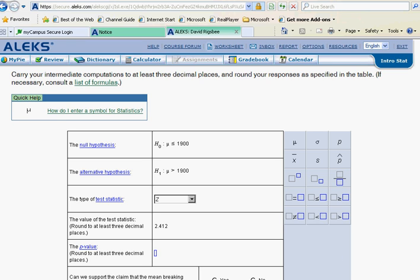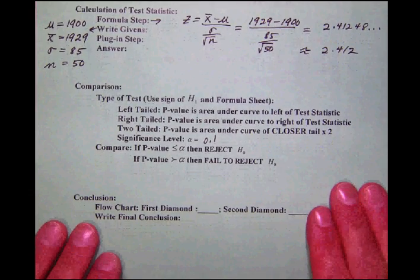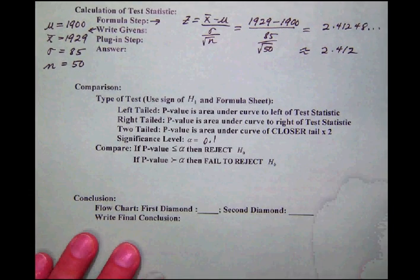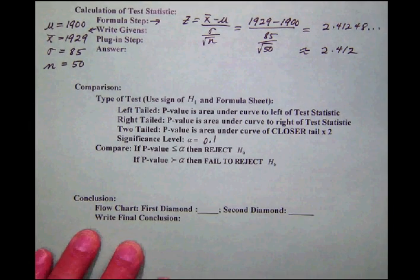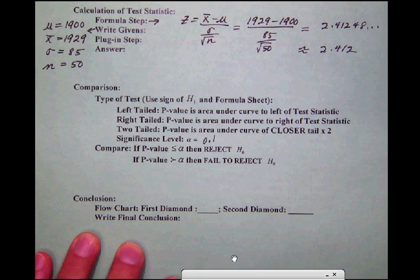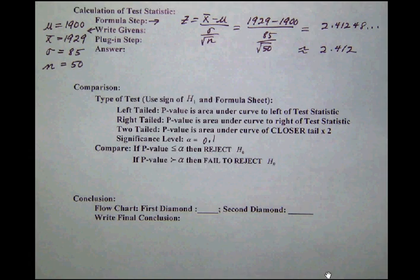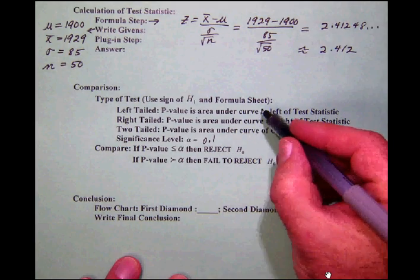Since we're dealing with the p-value test, we're going to have to follow these notes here very carefully. Notice the first thing in the comparison section is that we're going to determine the type of test. To determine the type of test, what we need to do is to use the sign of H1 and the formula sheet.